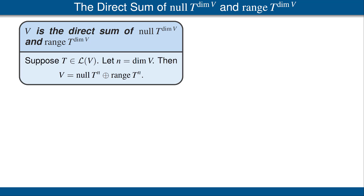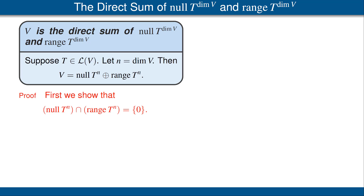Our last result in this video states the following. Suppose T is an operator on V and let N equal the dimension of V. Then V equals the null space of T to the N direct sum the range of T to the N. Before getting to the proof, note that it's a shame we don't have a theorem saying V equals the null space of T direct sum the range of T — that would make operator theory a lot easier, but unfortunately it's just not true. Please think of an example yourself, or see the example in the book, to show that we really do need to include the N there. To prove this result, we first want to show that we indeed have a direct sum, meaning the intersection of these two subspaces equals 0.